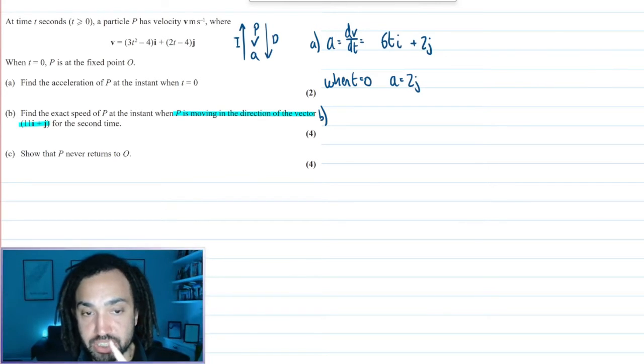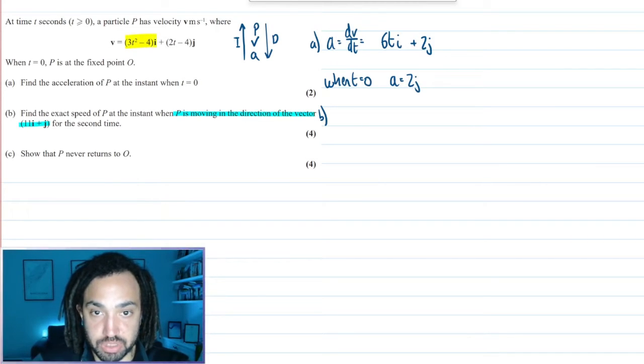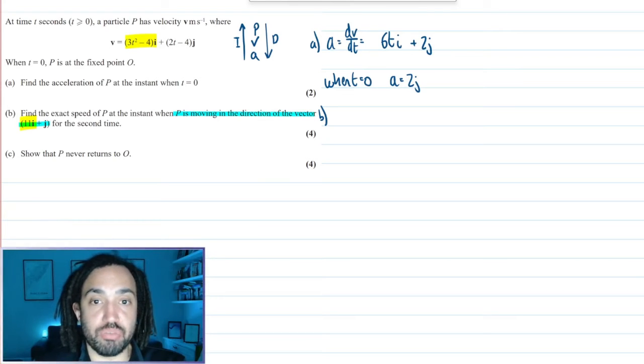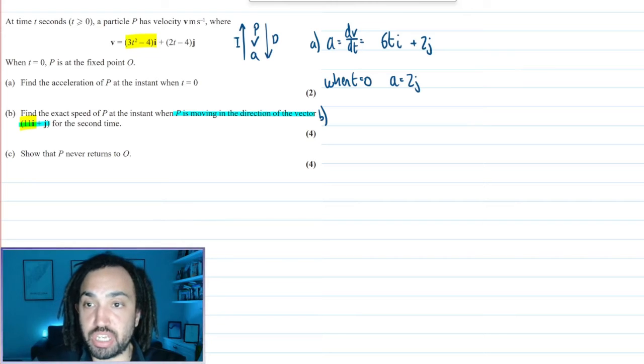So it's not the fact that the i component of the velocity is equal to 11, that's not necessarily true. What is true is that if I do the j's divided by the i's, it will be the same for both my velocity expression and also this direction vector.